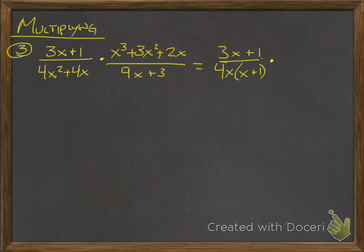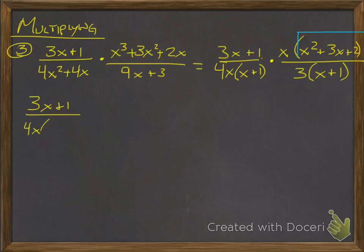And then in the numerator here, I can factor out an x. I'm left with x squared plus three x plus two, and I can factor out a three, and I'm left with x plus one. Now if you notice, this quadratic can still be factored, so I'm going to factor that. I'm going to rewrite everything. Three x plus one, four x times x plus one, x, and that factors into x plus one times x plus two, and three times x plus one.